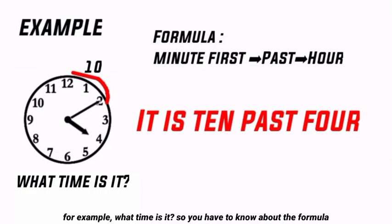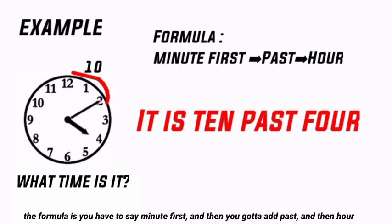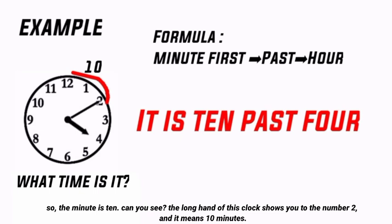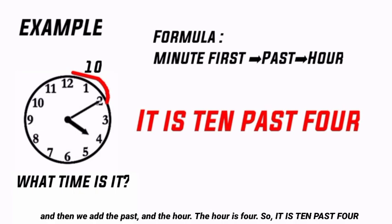For example, what time is it? You have to know the formula. The formula is: say the minute first, then add 'past,' then the hour. So the minute is 10 — the long hand shows you to number 2, which means 10 minutes. Then we add 'past,' and then the hour, which is 4. So it is 10 past 4.